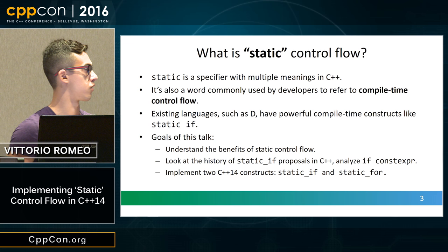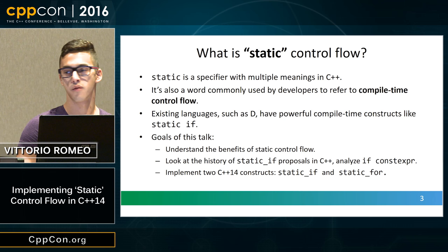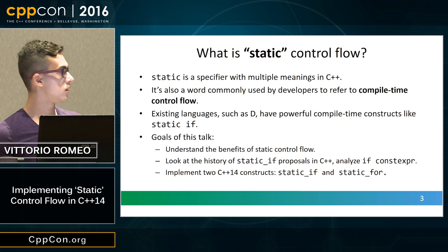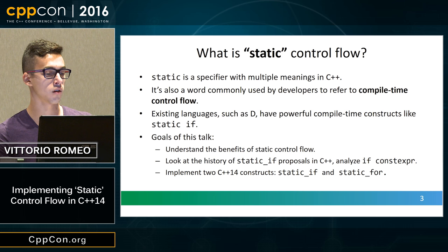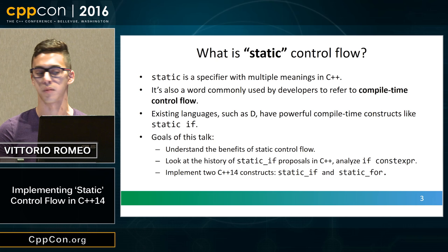What is static control flow? "Static" is a specifier with multiple meanings in C++, but it's also a word commonly used by developers to refer to compile-time control flow. Languages such as D have a very powerful metaprogramming facility called static if. The goals of this talk are understanding the benefits of static control flow, looking at the history of static if in C++, and analyzing the constructs we're going to implement in C++14.